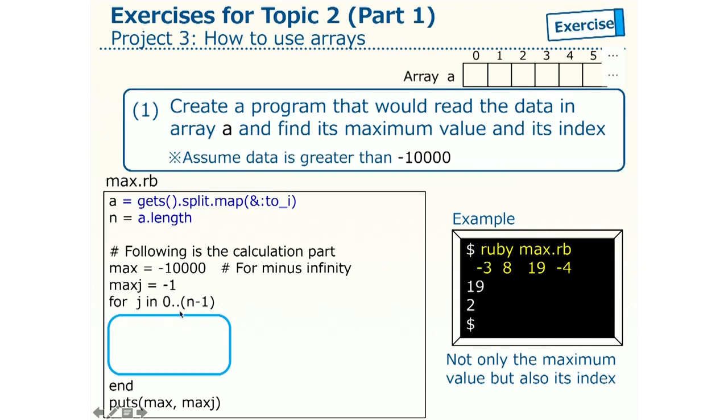Then, in this for loop, we go through the array A to update this maximum value and its index. More closely, by changing j from 0 to n minus 1, we examine the j's element of the array A to find the maximum value. This blue part will do this task.